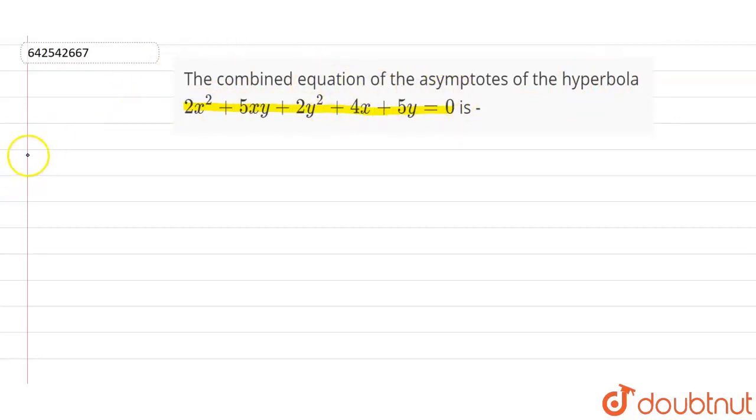So we know that first I write the equation of hyperbola here. This is what? 2x² plus 5xy plus 2y² plus 4x plus 5y equals to 0.